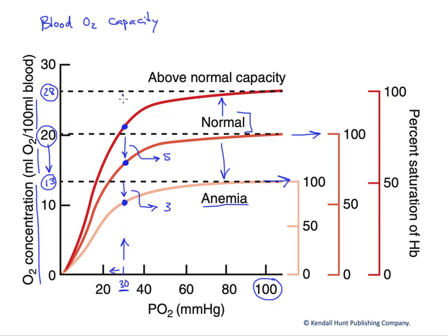We would unload to that same degree as we've seen in all the other curves. In this case, we'd fall from 28 down to about 21. Now we are delivering 7 mils of O2 per 100 mils of blood, enhancing our oxygen delivery.